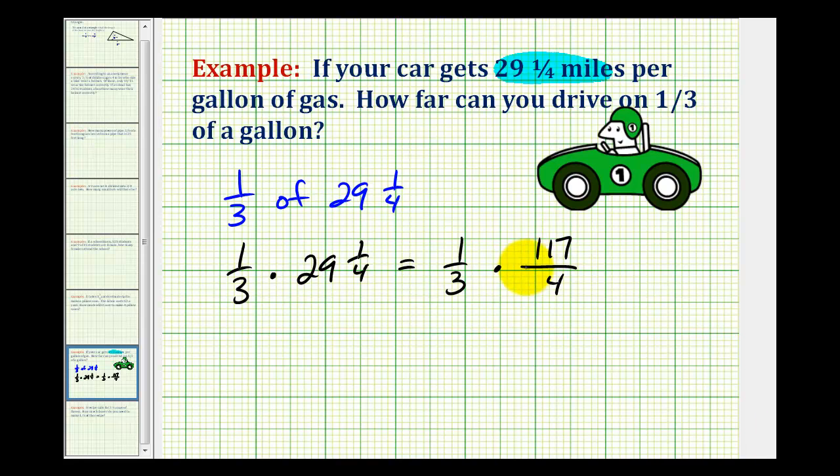And before we multiply, we should try to simplify. And it may be hard to see, but 117 is divisible by three. The reason I know that is because of a divisibility rule. If the sum of the digits is divisible by three, then so is the number. So since one plus one plus seven is nine, and nine is divisible by three, so is 117.